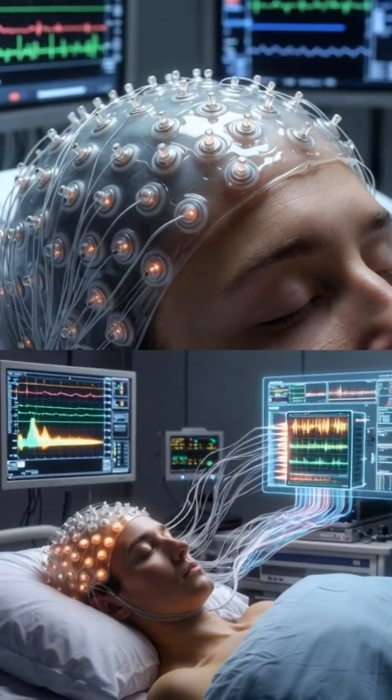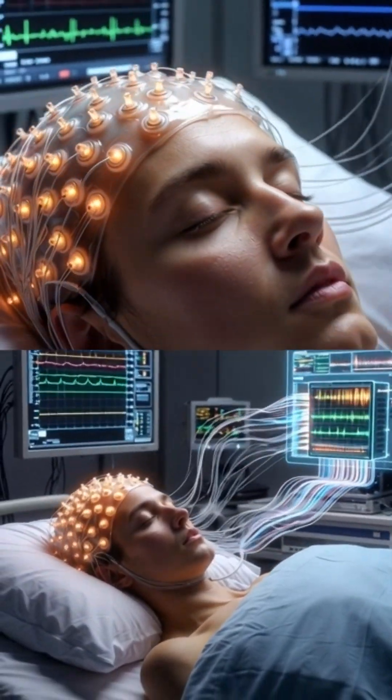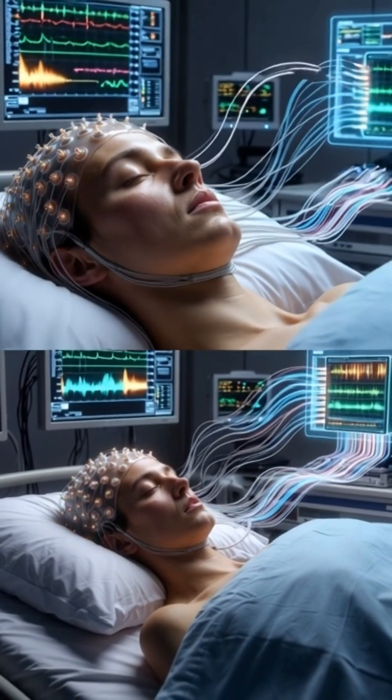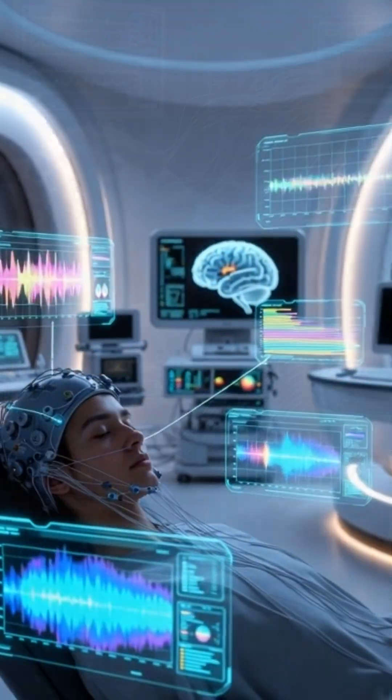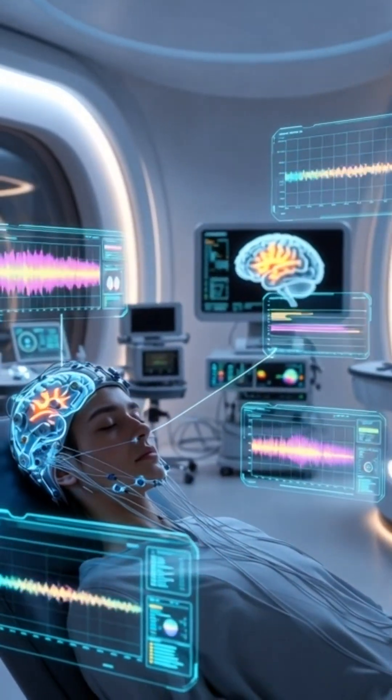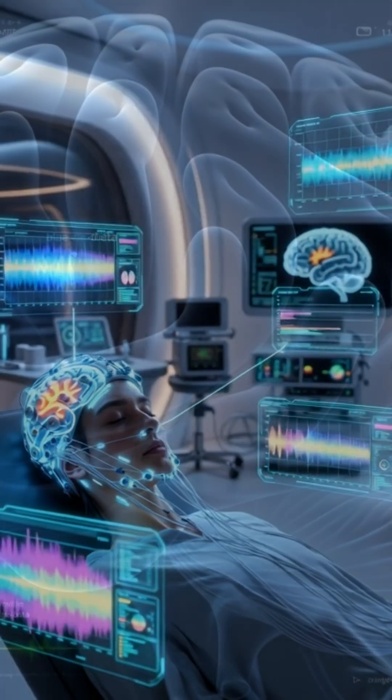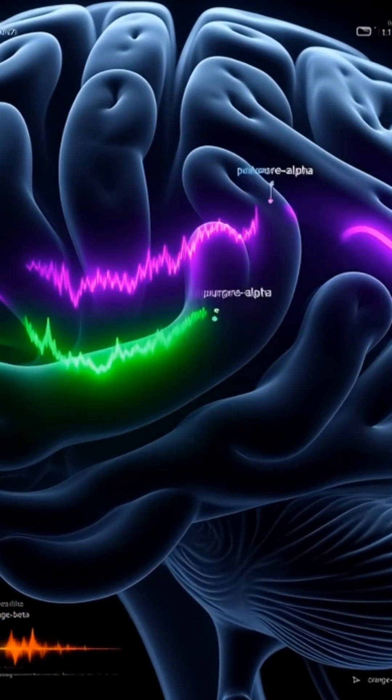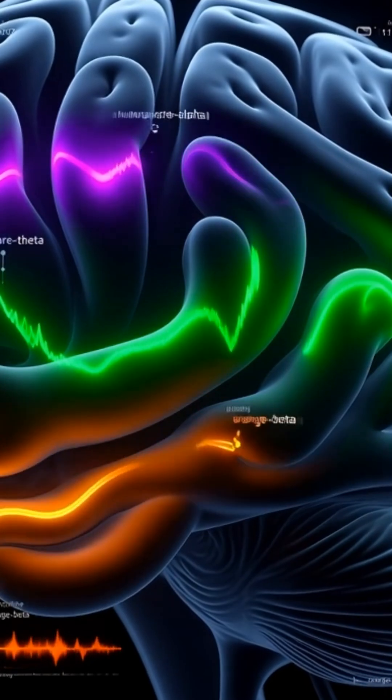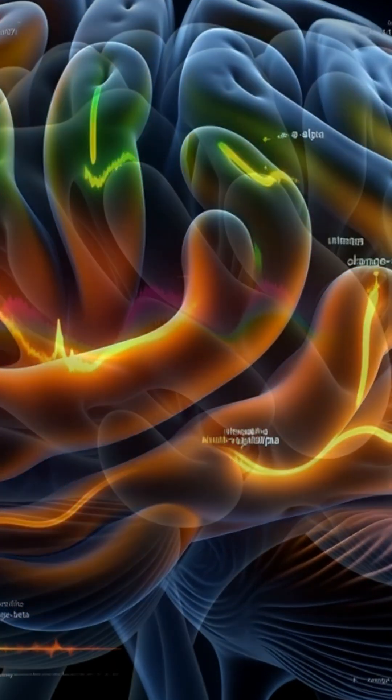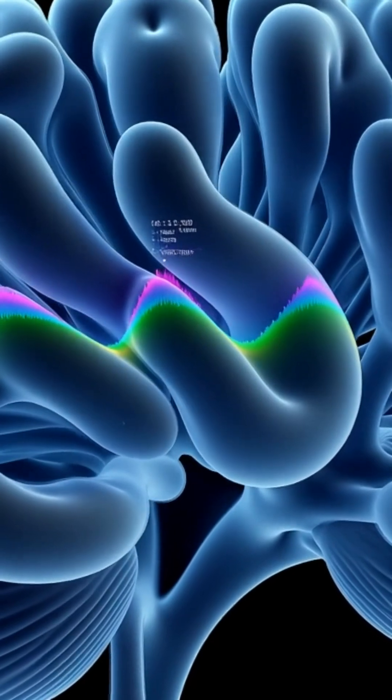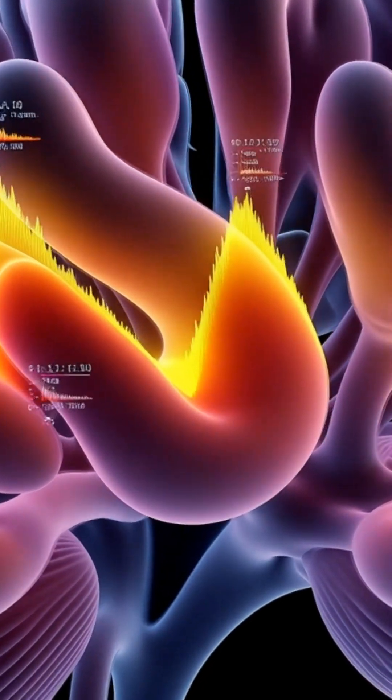Non-invasive electrodes capture electrical activity across the scalp. Modern systems stream this data in real time for analysis. EEG patterns are not random noise—they contain structured events, spindles, and slow waves that mark stages of sleep and hint at underlying cognitive processes, including dreaming.